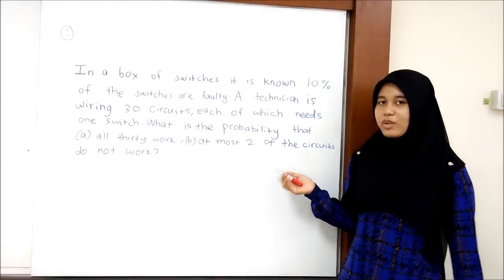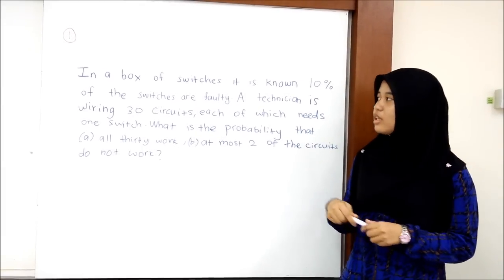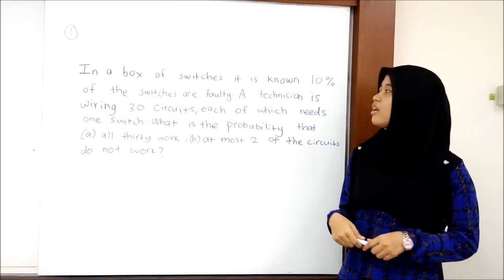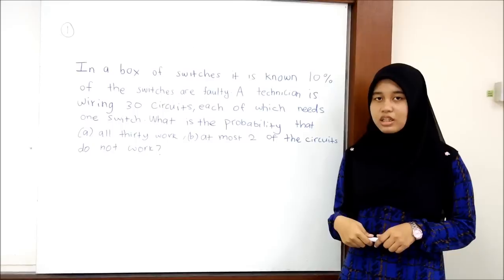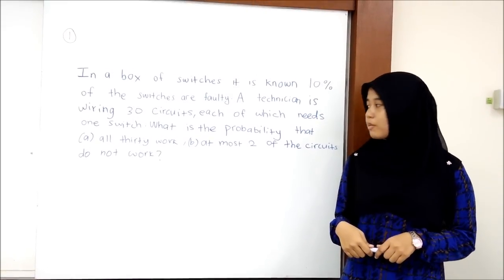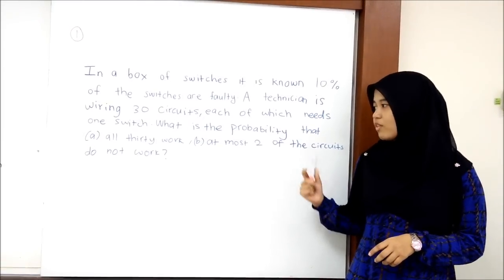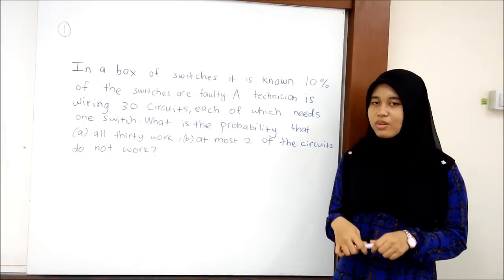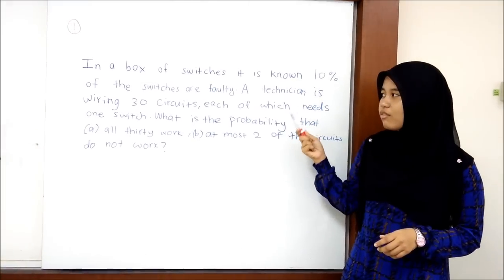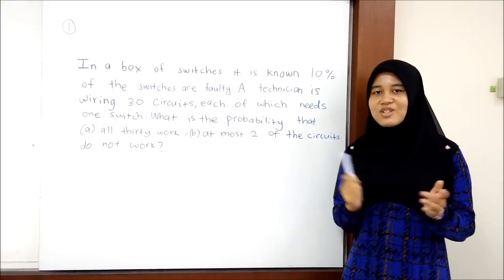The first question about binomial discrete distribution: in a box of switches, 10% of the switches are faulty. A technician is wiring 30 circuits, each of which needs one switch. What is the probability that (A) all 30 work, and (B) at most 2 of the circuits do not work? From the question we know that 10% are faulty from 30 circuits.